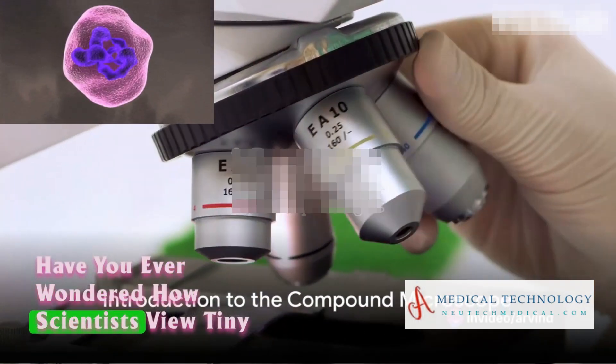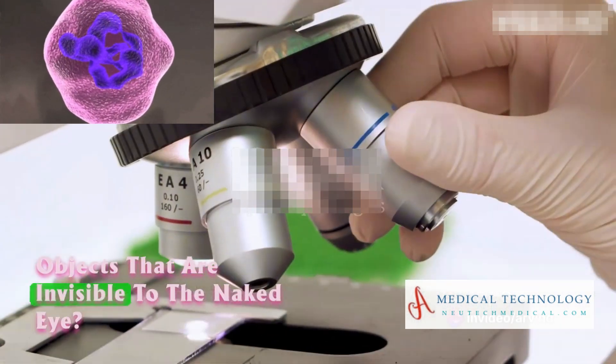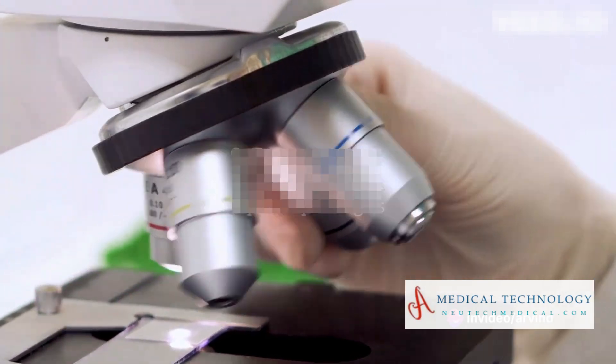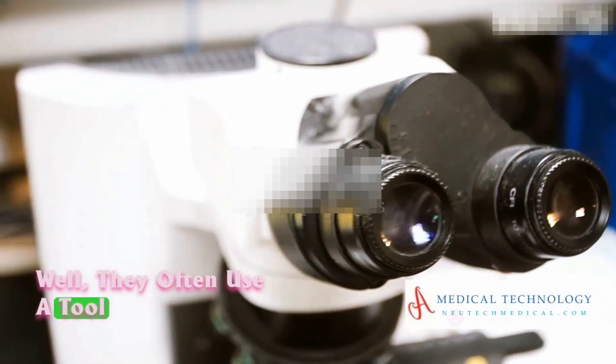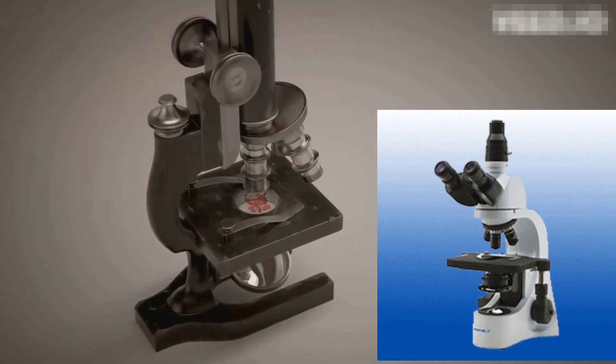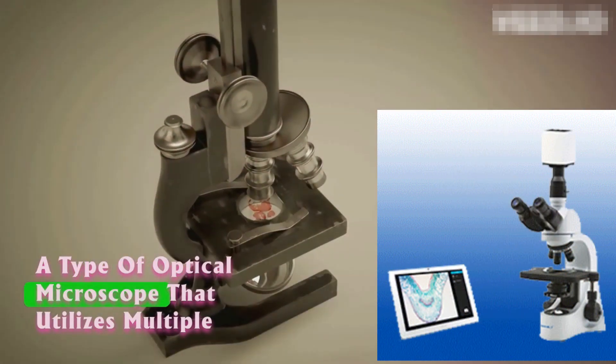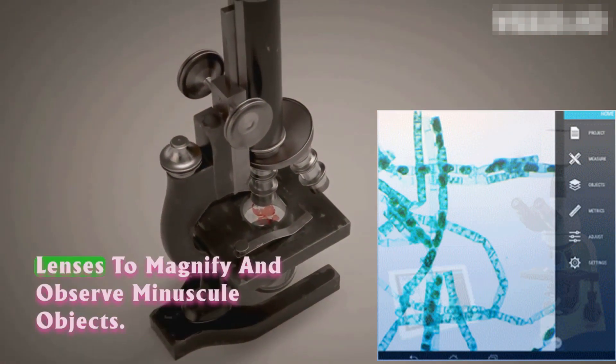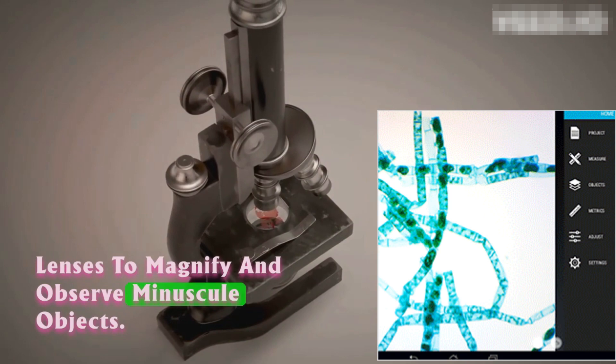Have you ever wondered how scientists view tiny objects that are invisible to the naked eye? Well, they often use a tool known as a compound microscope, a type of optical microscope that utilizes multiple lenses to magnify and observe minuscule objects.